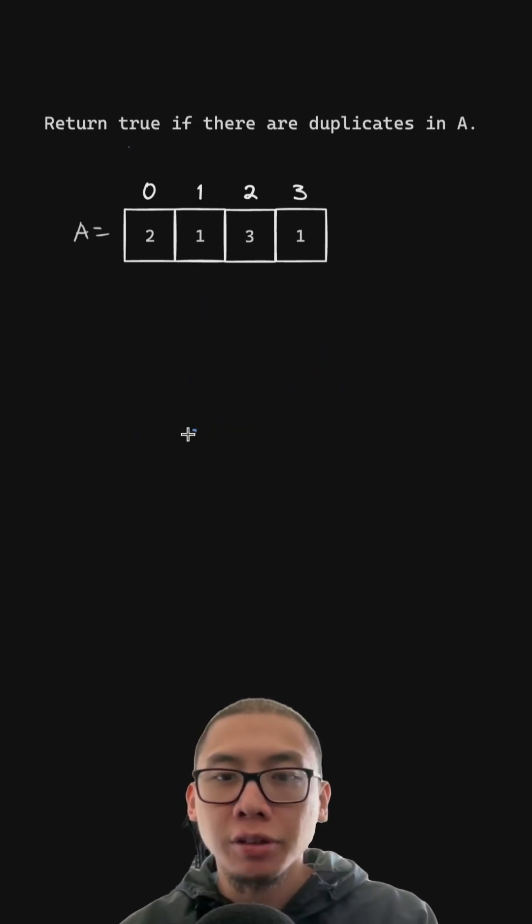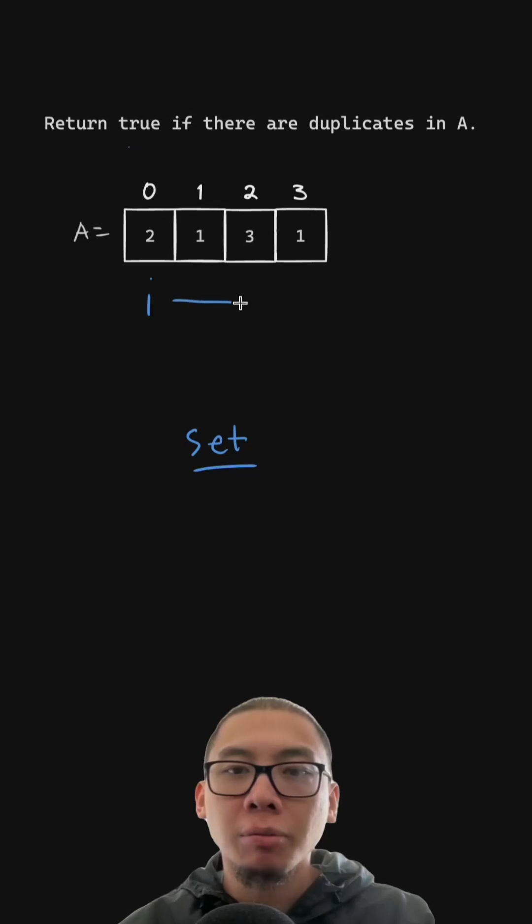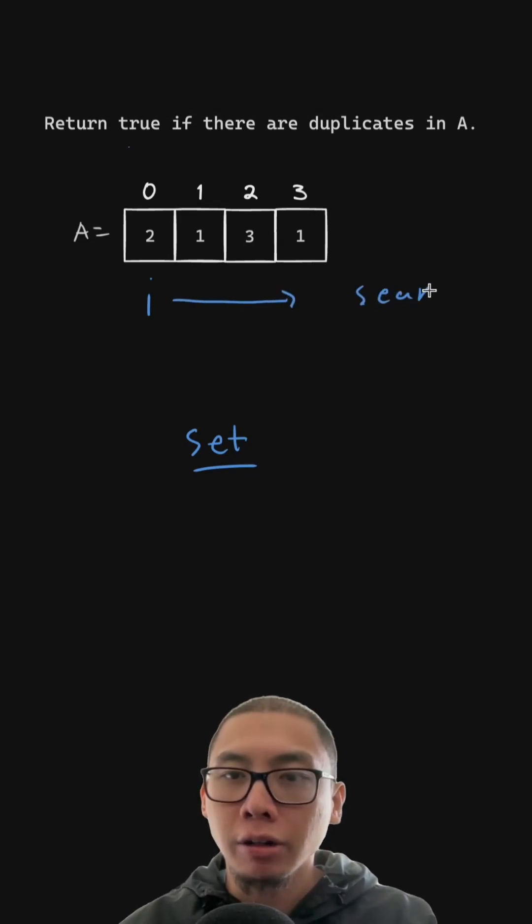To make this faster, let's utilize a hash set for quick and efficient lookups. For each element, we want to search to see if it exists in our hash set, and if it doesn't, then we could add it.